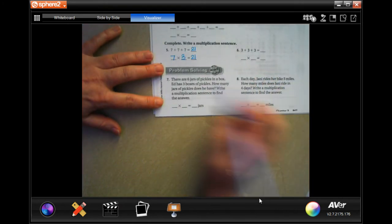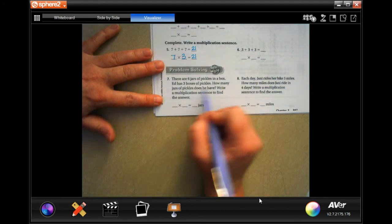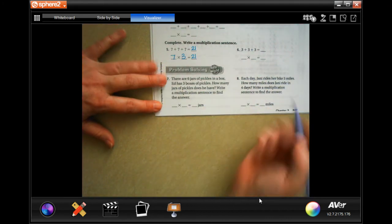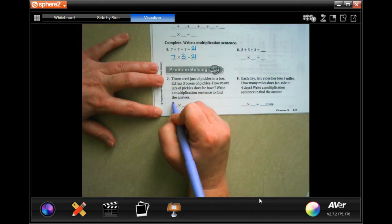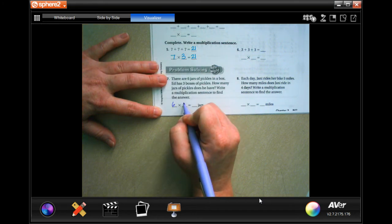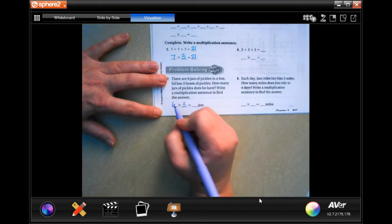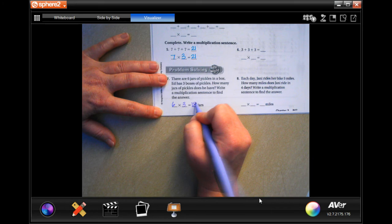There are six jars of pickles in a box. Ed has three boxes of pickles. How many jars does he have? Well, there's six jars in each box and he has three boxes, and six times three is 18.